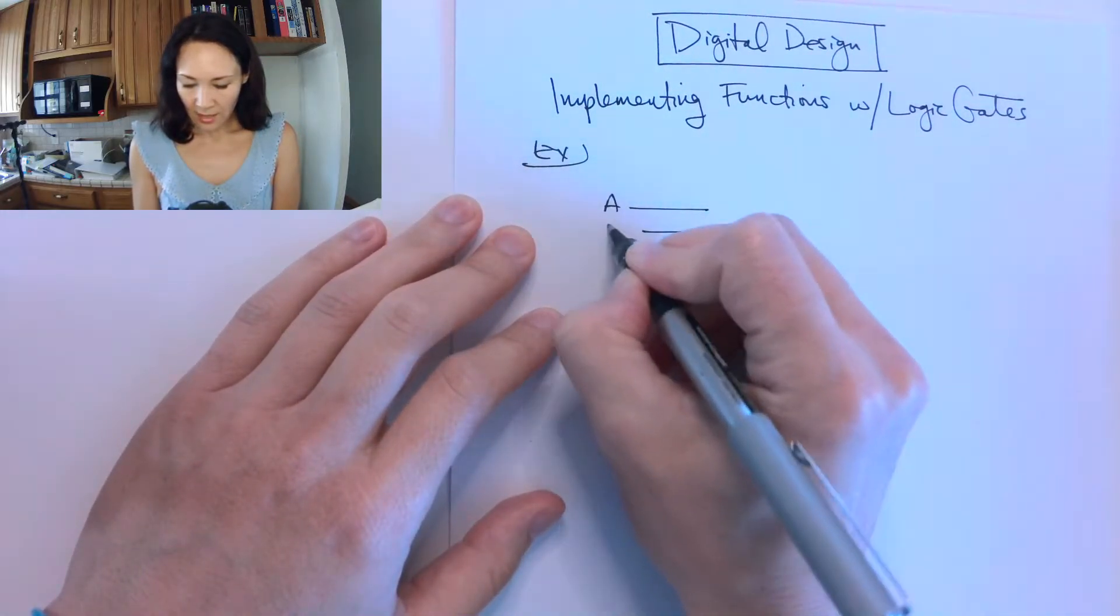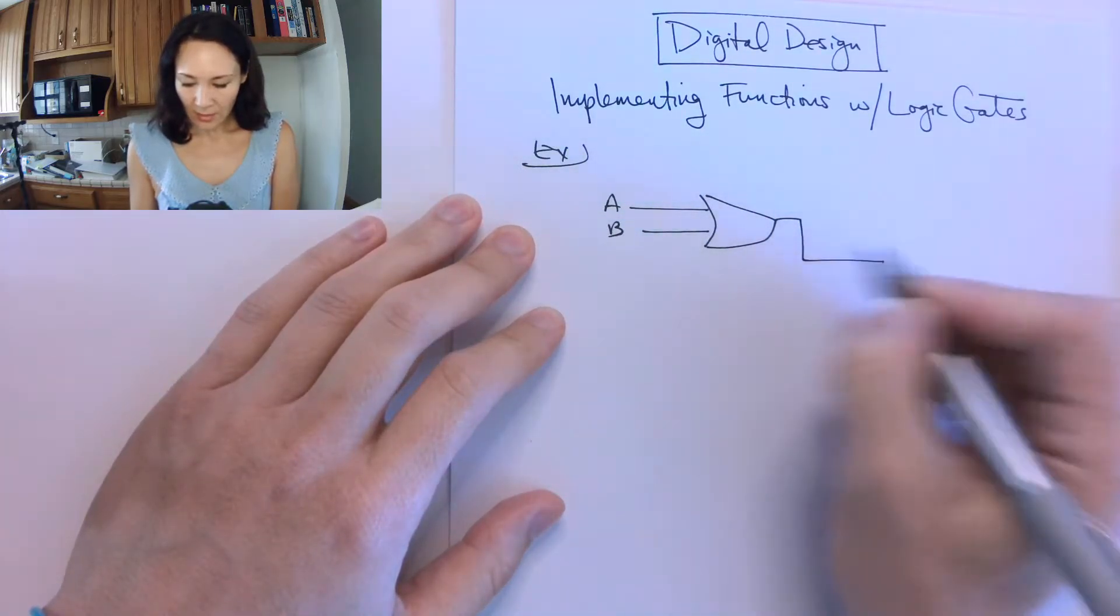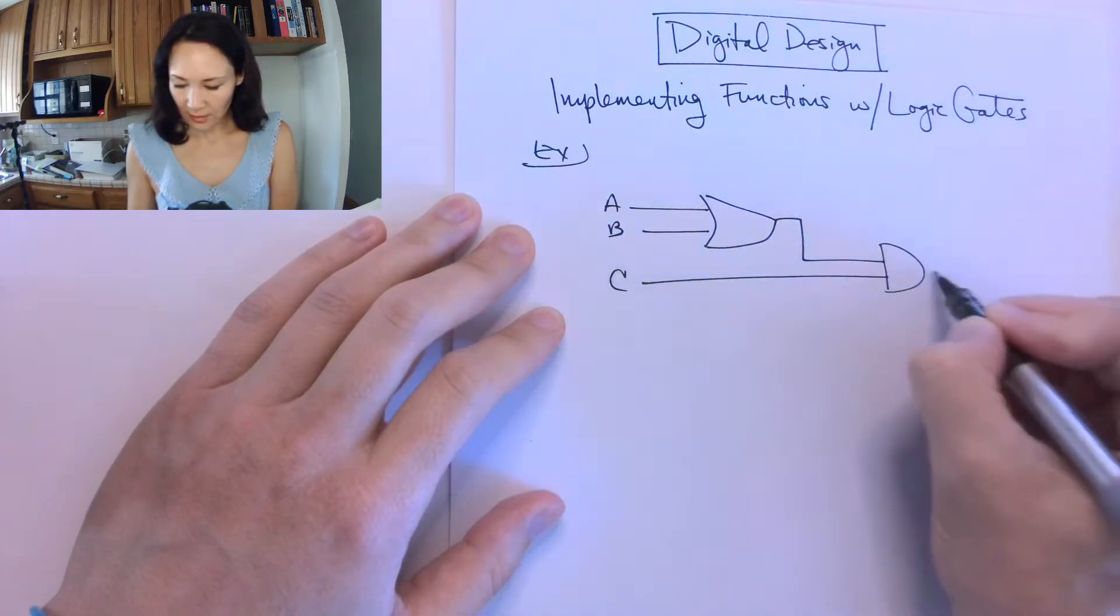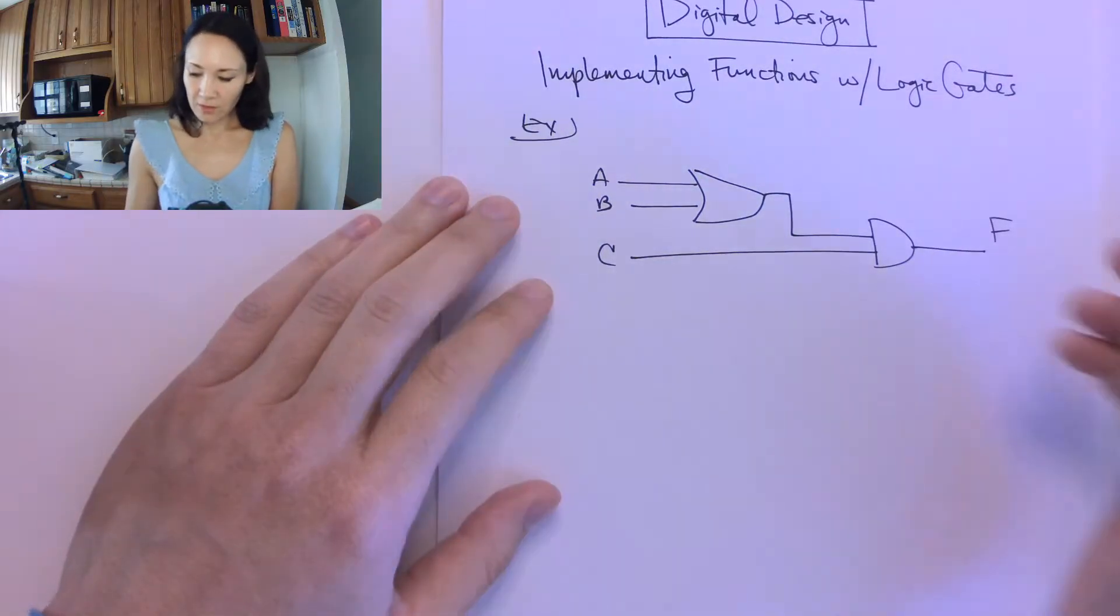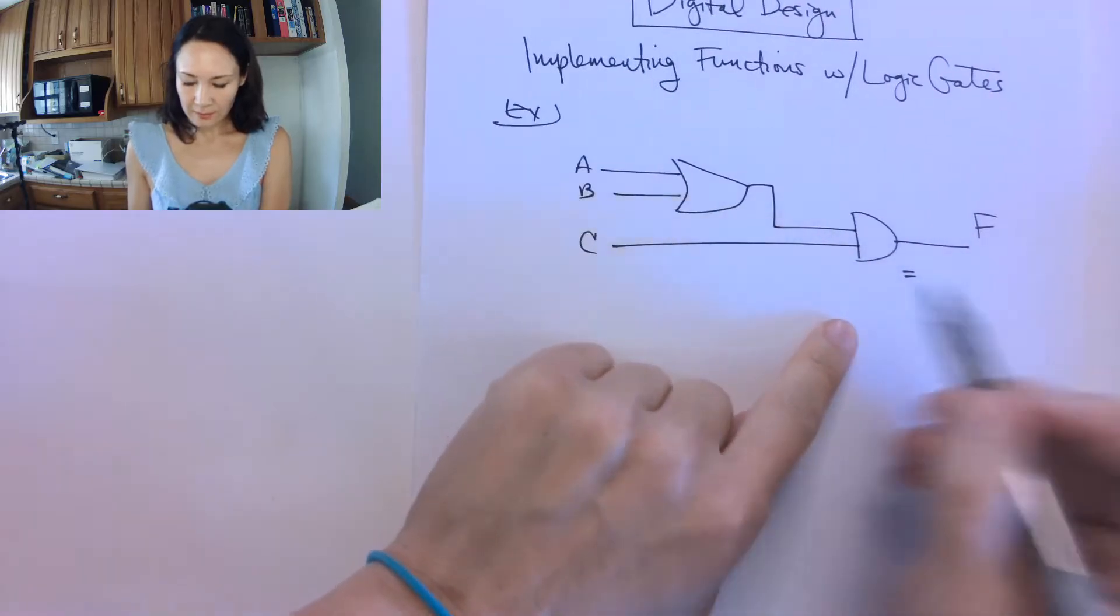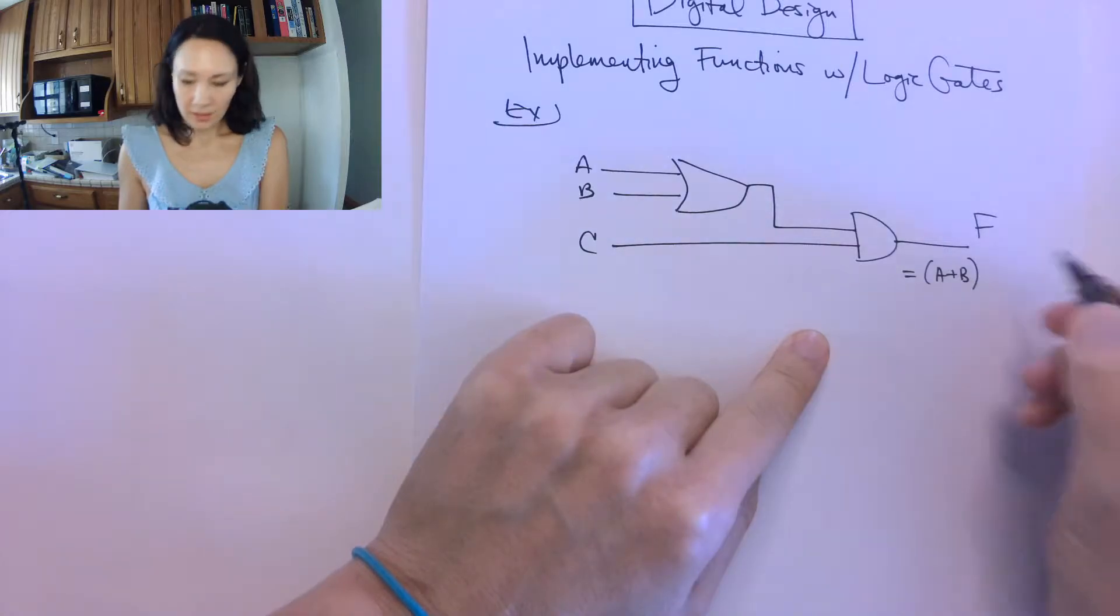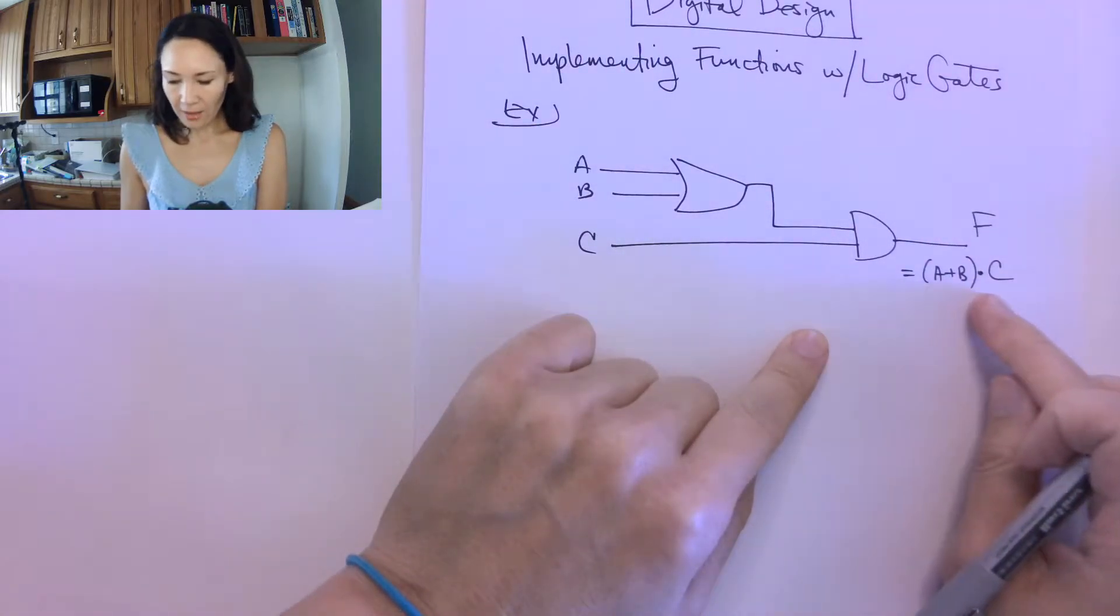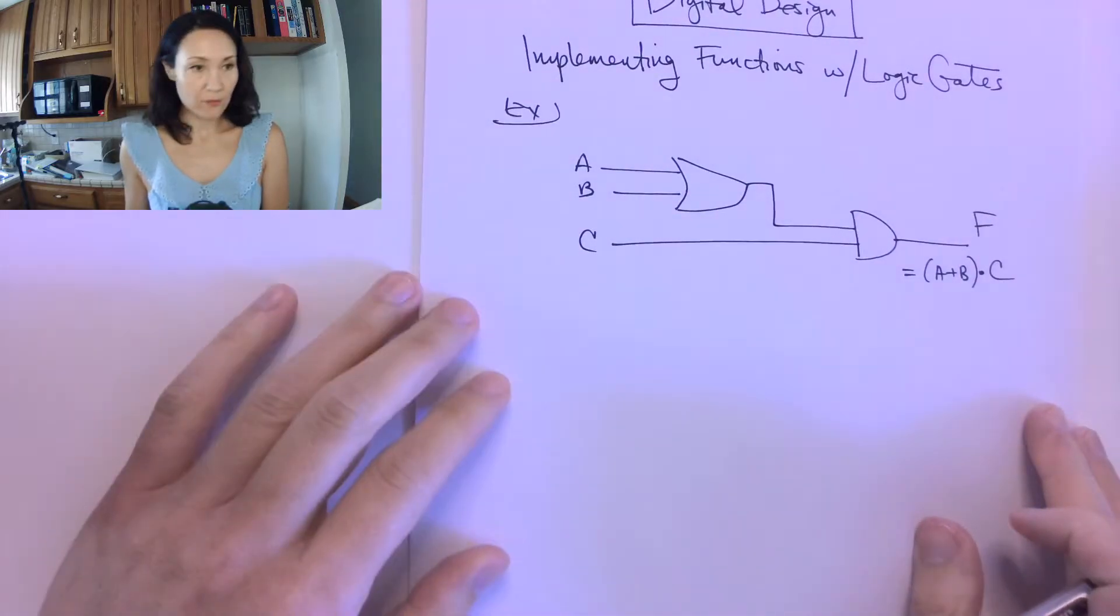Suppose we have A and B as inputs to an OR gate, and then the output of the OR gate gets ANDed with a third input C. Our result, we'll call it function F. So function F is going to implement A or B, and then that result gets ANDed with C. This is the algebraic statement corresponding to the gates that we have drawn out here.